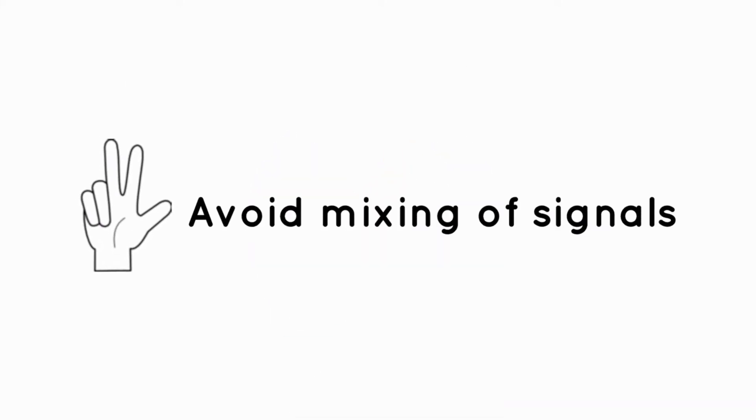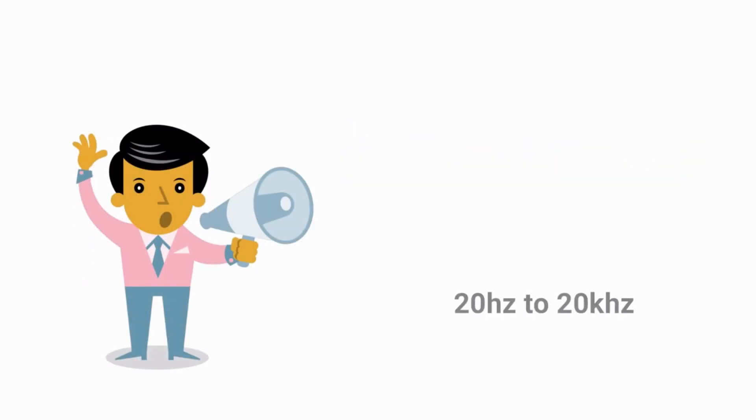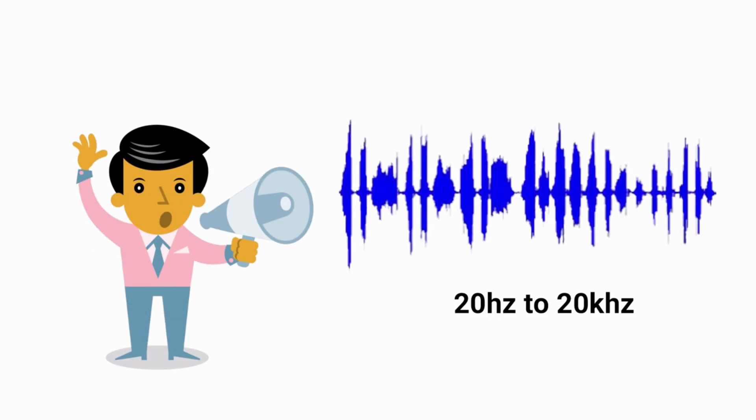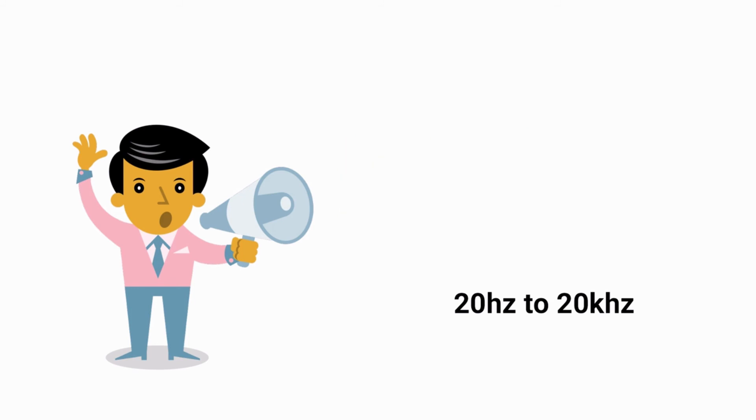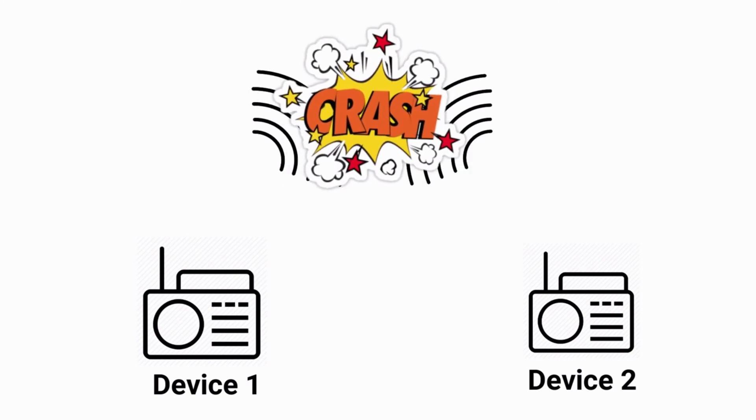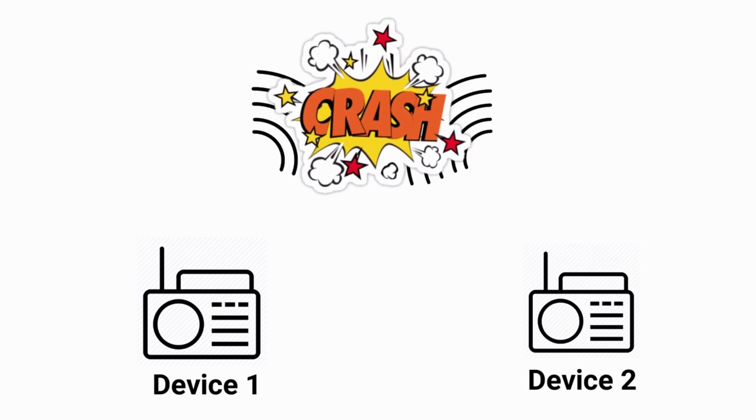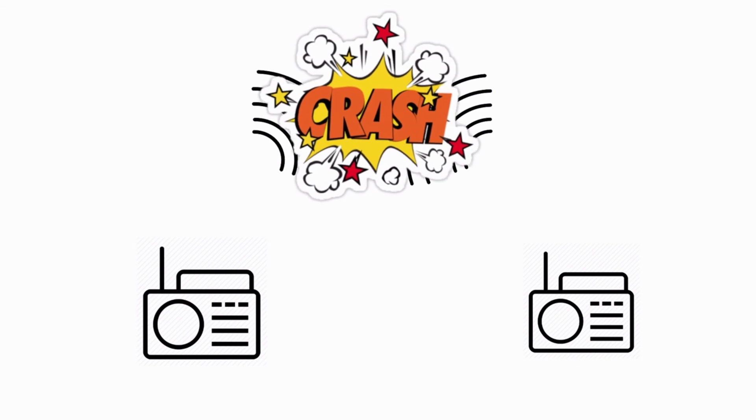Number 3: Avoid mixing of signals. We all know that frequency of audio signal ranges from 20 Hz to 20 kHz. So if two devices send out unmodulated audio signals, it will result in mixing and eventually the receiver will receive some gibberish audio which will be of no use.